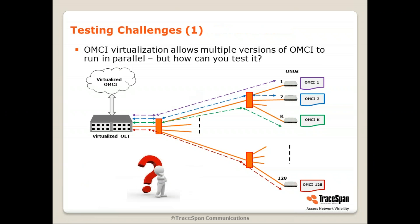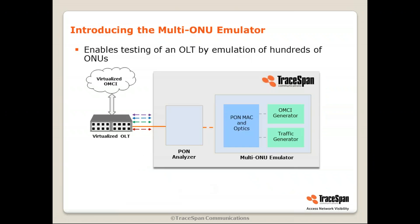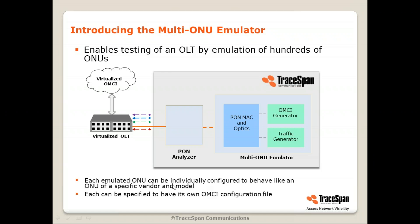This brings some challenges in testing. How can you test that all these different OMCI versions can run in parallel? Let me introduce some solutions that Traceband has for this. The first and very significant solution is the multi-ONU emulator — a single box that can emulate up to 256 ONUs. It has emulation of the PON MAC and the optical interface, as well as an OMCI generator and a traffic generator. Each emulated ONU can be individually configured to behave like an ONU of a specific vendor and model.